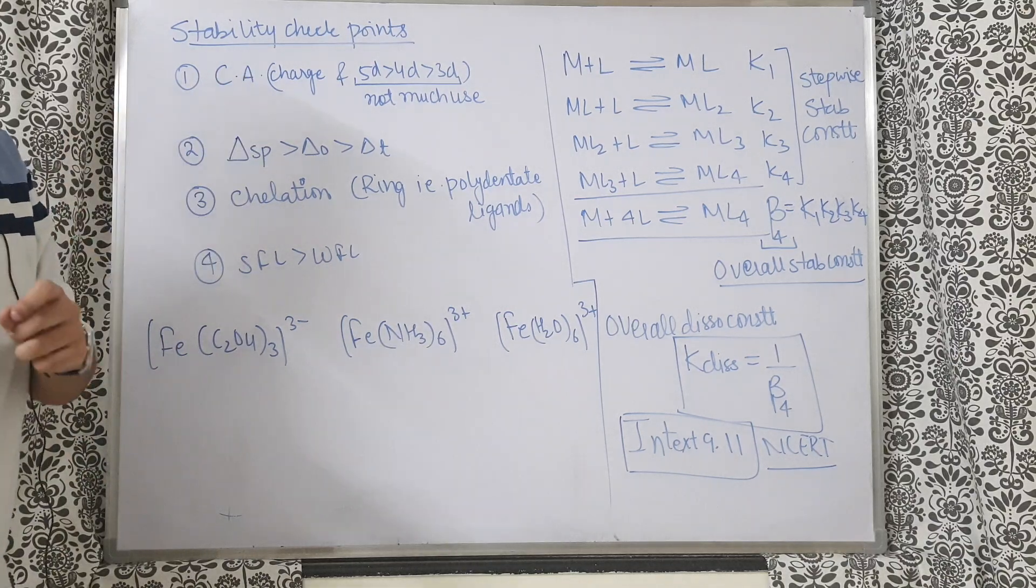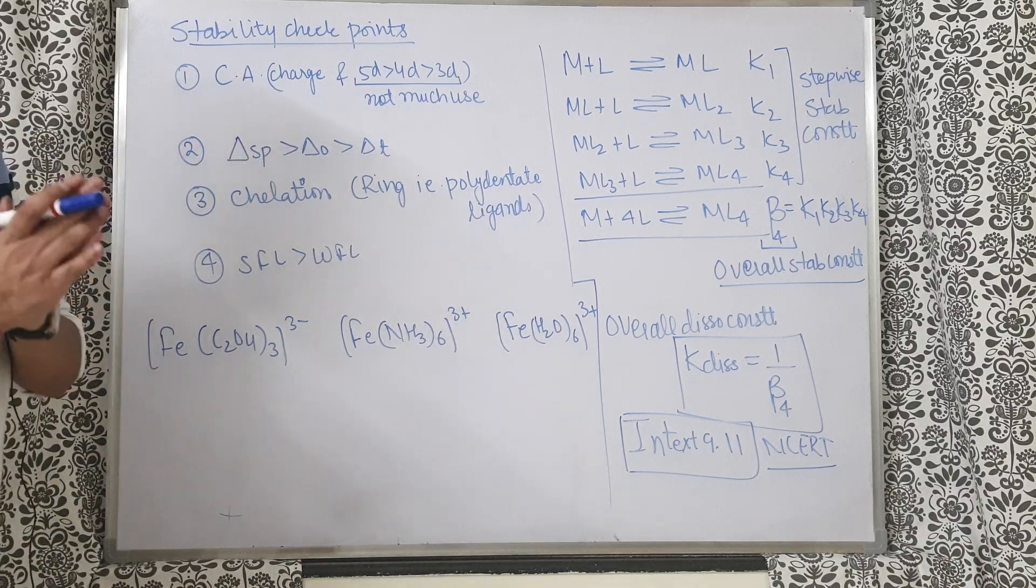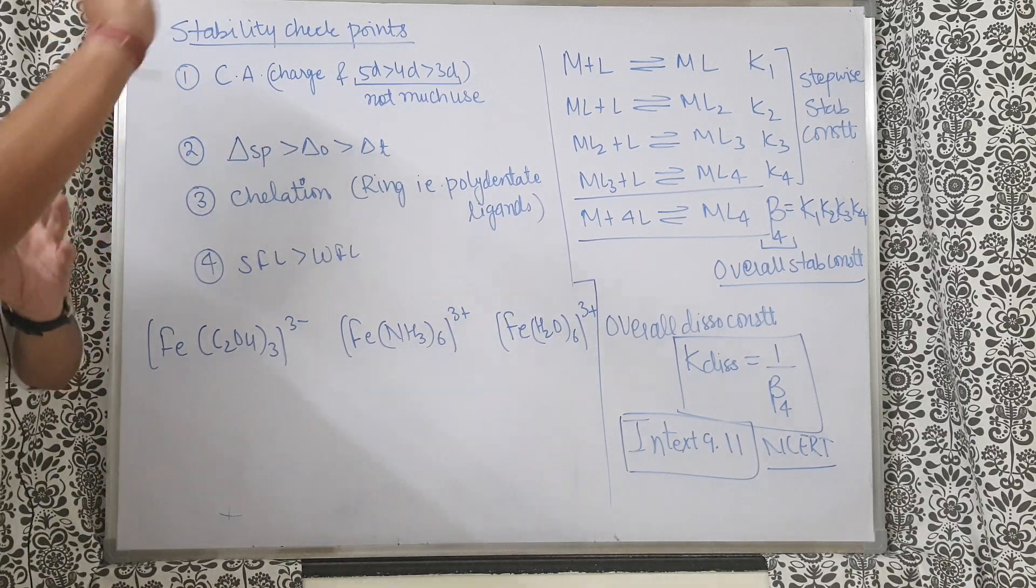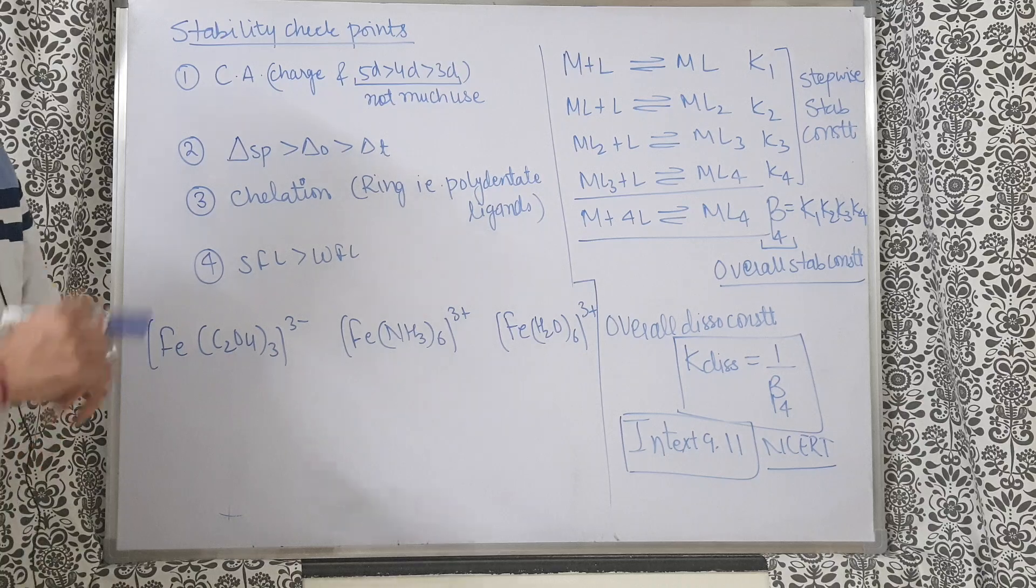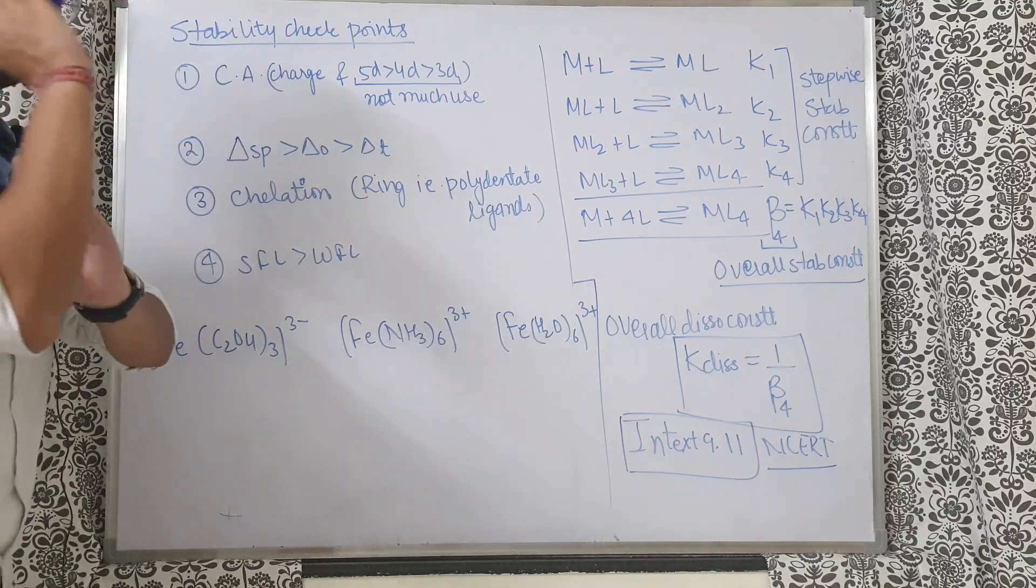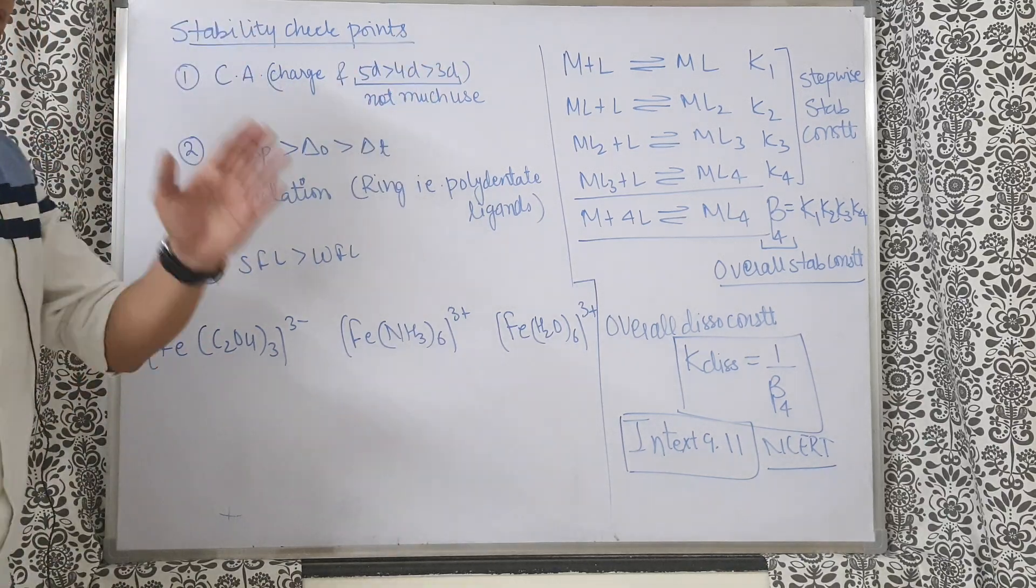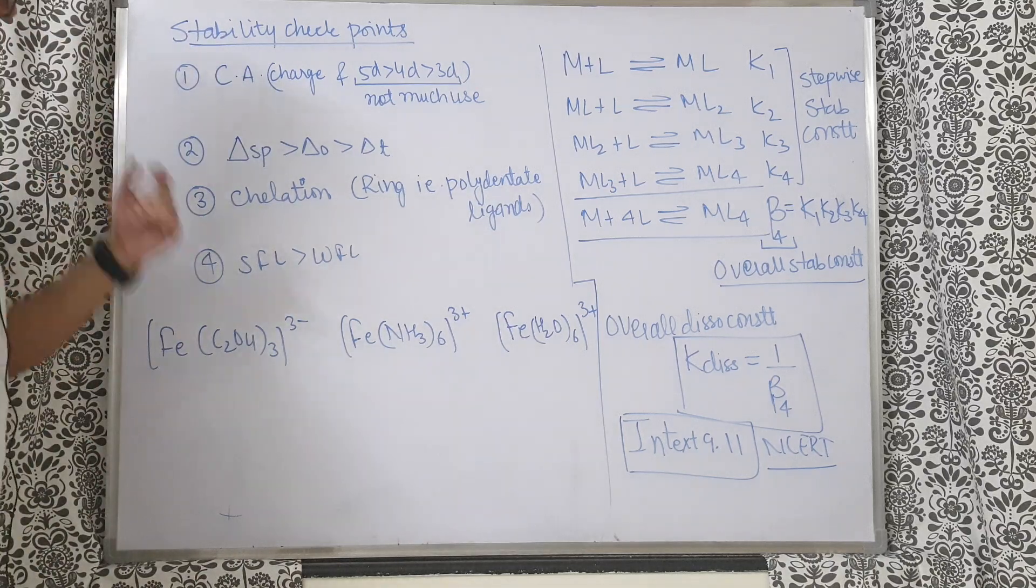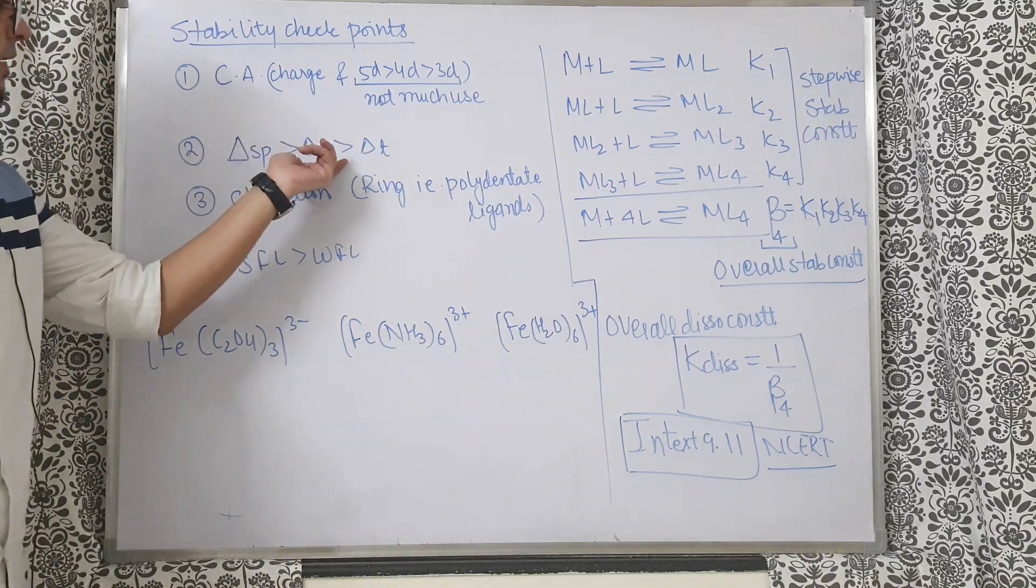We don't have to go into depth of it because it's not important for NEET examination. The synergic bond also comes into play, but just ignore, keep it simple, crack the NEET exam and become a doctor. And just understand this theory up to there only. Number two: delta sp more than delta o more than delta t.